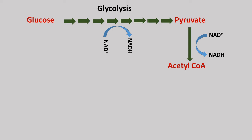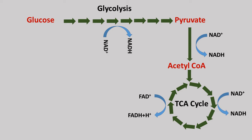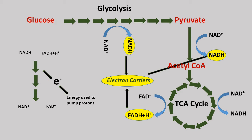This acetyl coenzyme A enters the citric acid cycle and is further oxidized, producing reduced NAD and reduced FAD besides ATP. In the end, we obtain two electron-carrying molecules in reduced state: reduced NAD and reduced FAD. These electron carriers participate in the electron transport chain and get oxidized back to NAD and FAD, losing their high-energy electrons. The energy of these electrons is released by transporting downhill along a chain of electron carriers, which is used to pump protons from the matrix to the inner membrane periplasmic space.